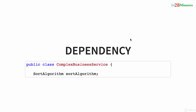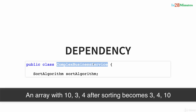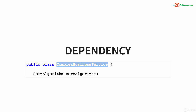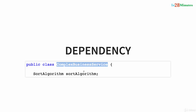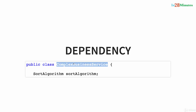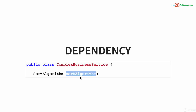Let's go one step deeper and consider an example. Let's say you are writing a class called ComplexBusinessService that has a lot of complex business logic. One of the things you'd want to do is sort a set of numbers — for example, input 10, 3, 4 would become 3, 4, 10. The ComplexBusinessService class uses a sort algorithm to sort the numbers, so it depends on the sort algorithm. The sort algorithm is a dependency of ComplexBusinessService. A dependency of a class is basically everything it needs to be able to perform its functionality.